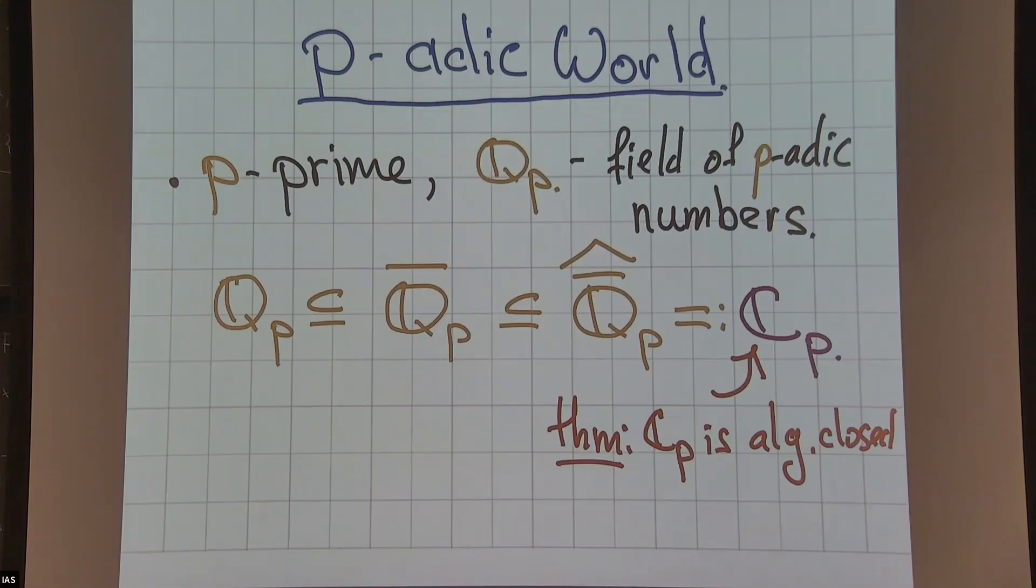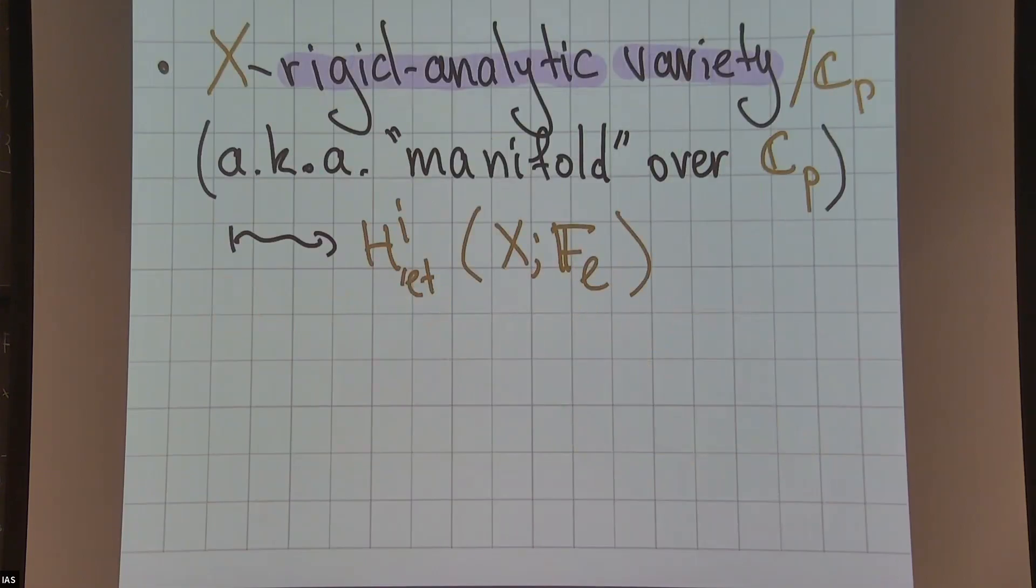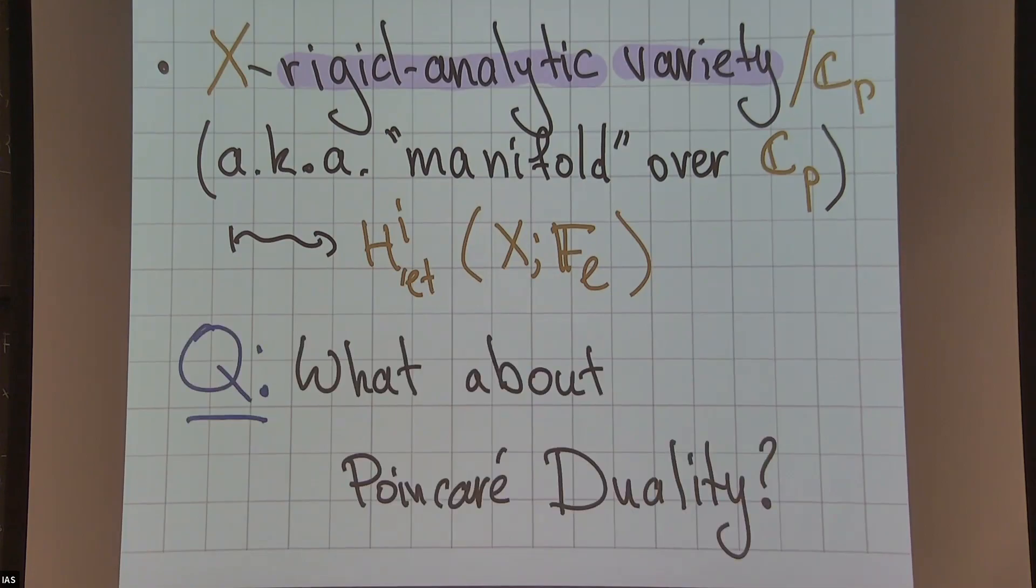There is a notion of rigid analytic variety developed by many people - if I want to mention them: Tate, Huber, Berkovich, Raynaud, maybe some other people. What it's supposed to capture is the notion of analytic manifold over C_p instead of complex numbers. In particular, you can associate étale cohomology groups to such spaces. This is a meaningful notion - it is again an F_ℓ vector space. So we can ask: what about Poincaré duality or other properties of these groups? Classical work (now classical work) of Huber and Berkovich tells us that in some cases everything is as good as in the algebraic situation.